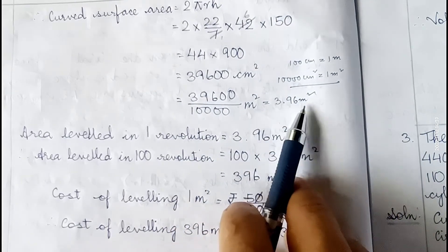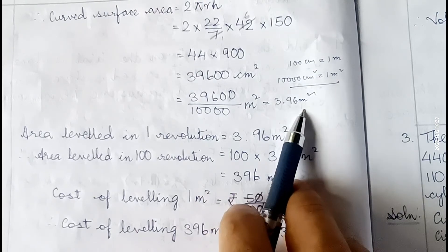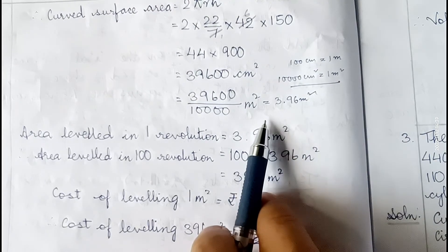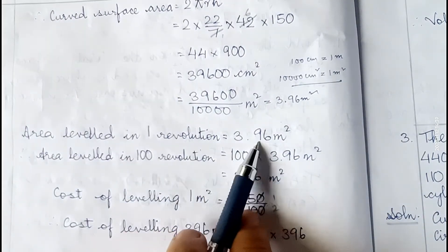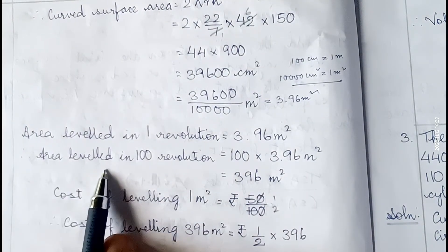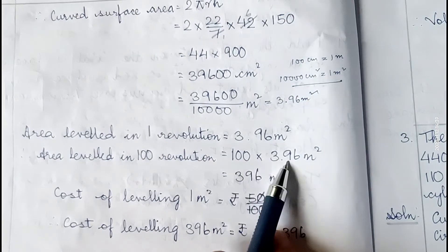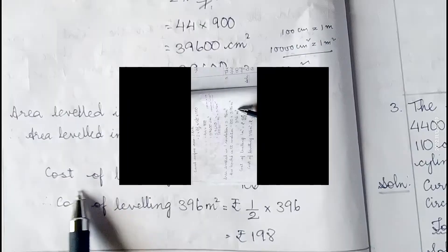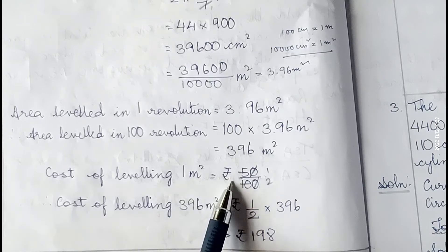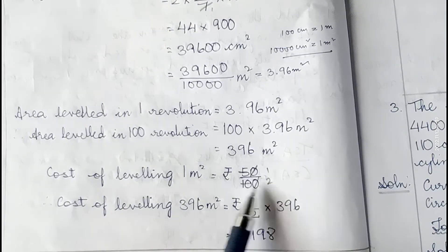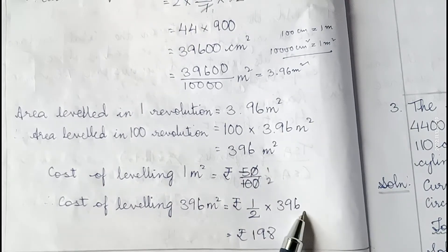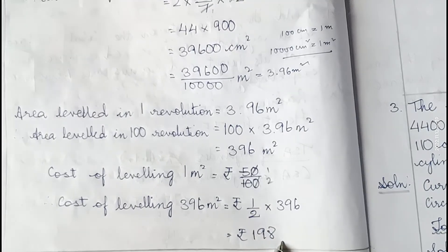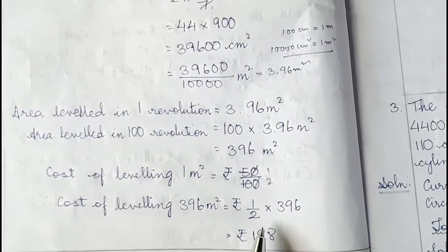Area leveled in one revolution = 3.96 m². Area leveled in 100 revolutions = 3.96 × 100 = 396 m². Cost of leveling 1 m² = 50 paise = ₹0.50 = ₹1/2. Therefore cost = (1/2) × 396 = ₹198. Therefore the cost of leveling the ground is ₹198.